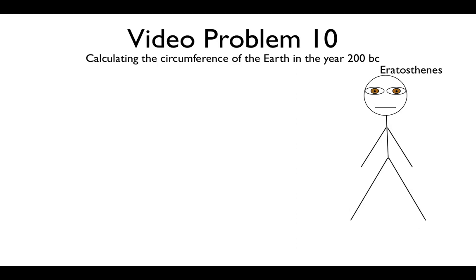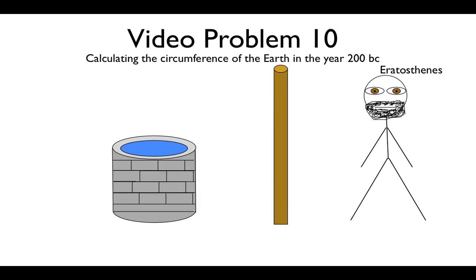I'm pretty sure he had a beard. What's so remarkable about this is that he used knowledge of a well in Egypt, he used a pole, he used the Sun, and he used a basic knowledge of right triangle trigonometry.